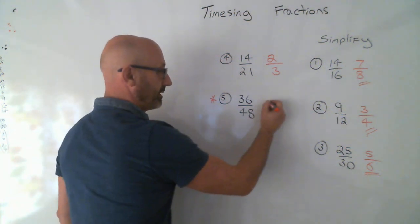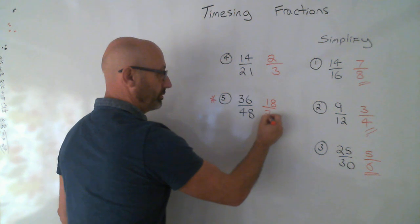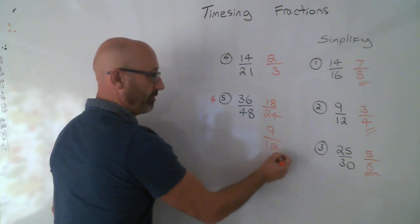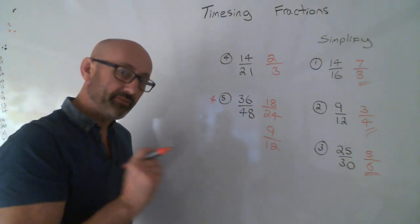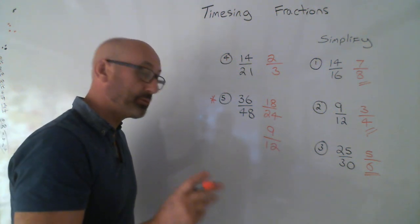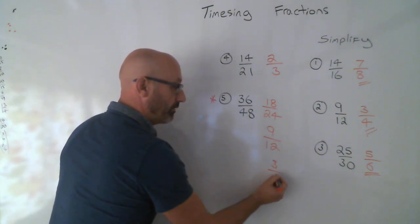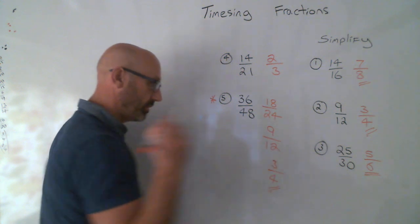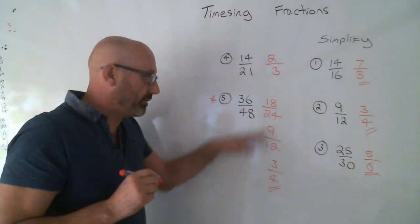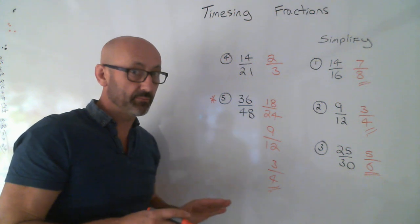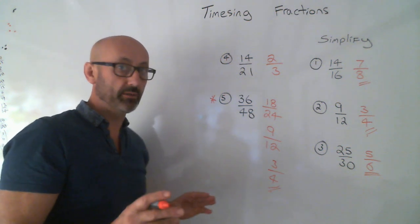If you keep dividing by 2, so 18 over 24, 9 over 12, then never forget the 3's. People always forget the 3's. 3 fits into 9 three times. 3 fits into 12 four times. Or, we could have got there a few different ways.